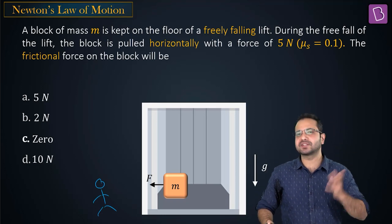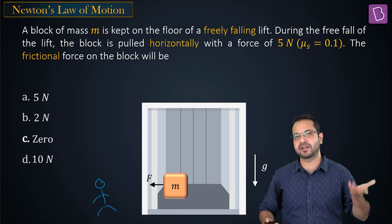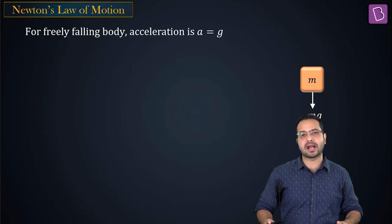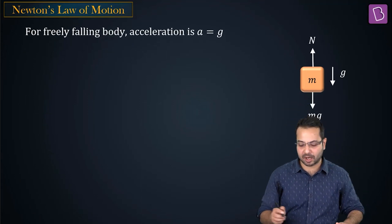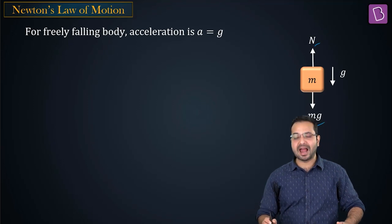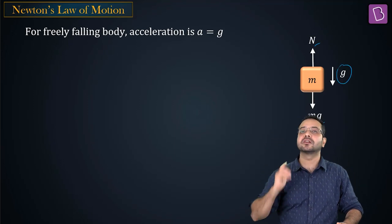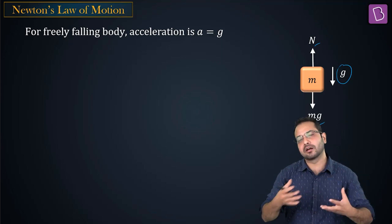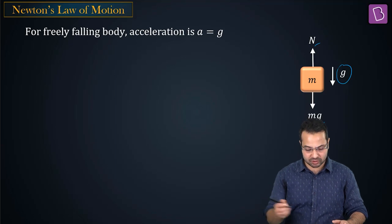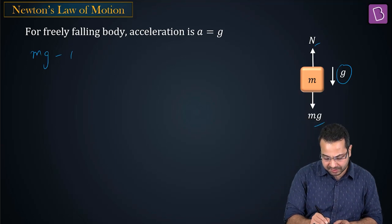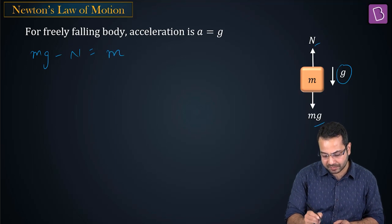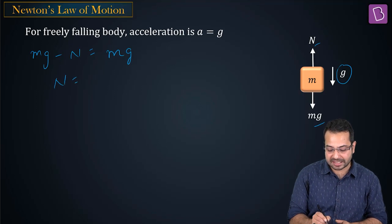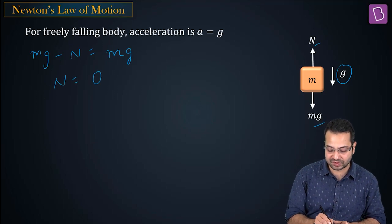First, we make the free body diagram: weight acting downwards, normal reaction from the lift acting upwards, and the acceleration is g downward because it is freely falling. Writing F = ma: mg minus N equals m times g, so N equals mg minus mg equals zero.